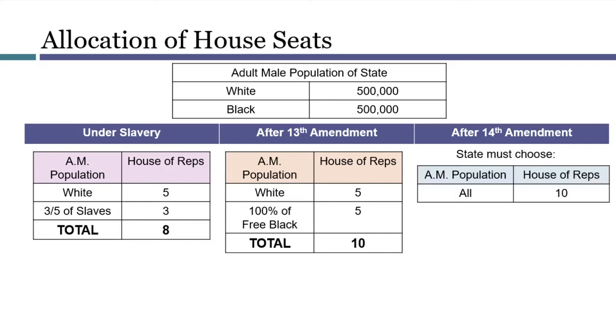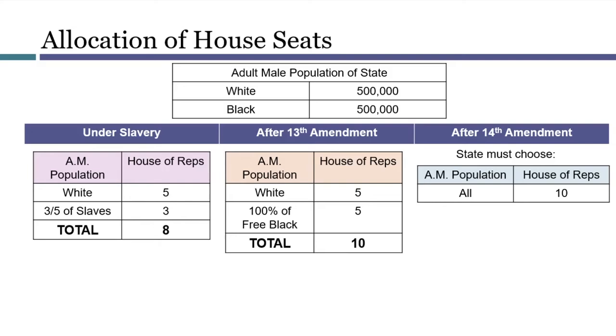A state would have to choose. Either it could allow all of its adult males to vote and have ten seats in the House, or it could choose to discriminate and receive only five seats. It was a clever idea, but it didn't work. Notwithstanding Section 2, the southern states were still disenfranchising their non-white voters. These states figured it was worth the risk, because Congress was unlikely to actually follow through when it came time to reallocate seats in the House after the 1870 census. And indeed, to this day, Congress has never relied on Section 2 to reduce any states' representation.